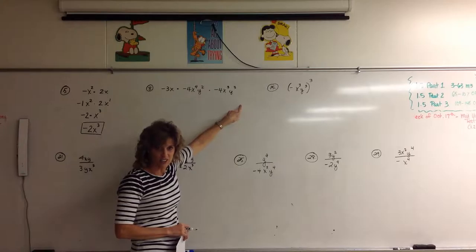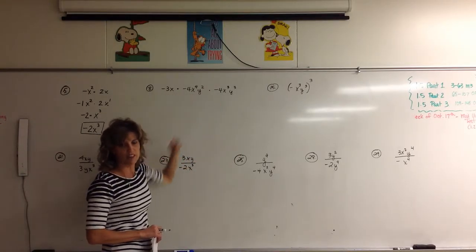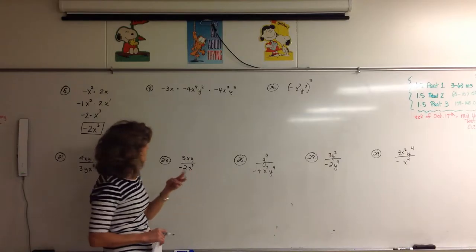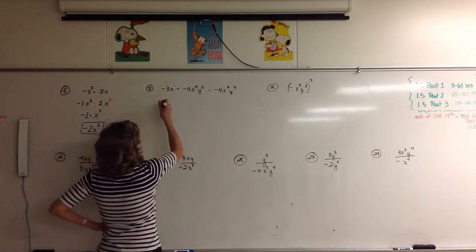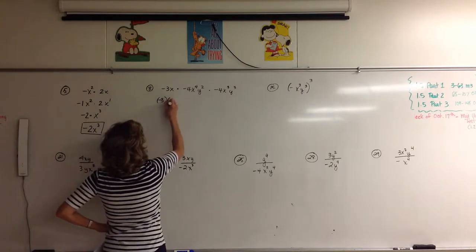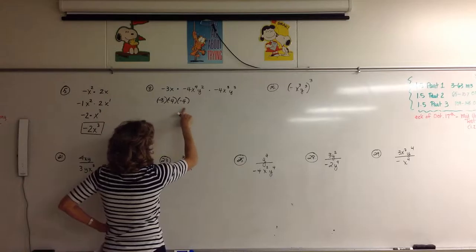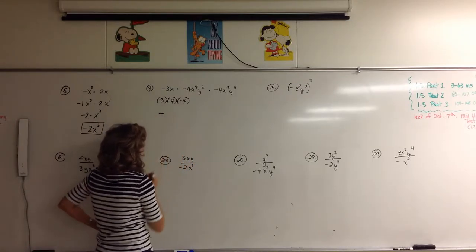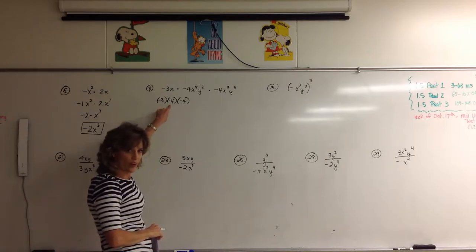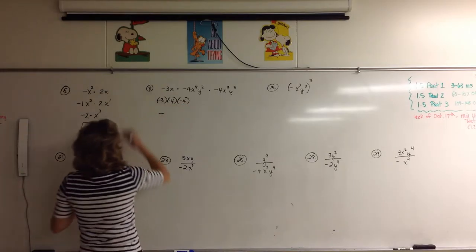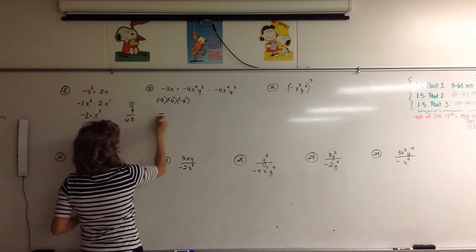Number eight — it looks a little scarier. Let's reorganize it because we're multiplying eight different factors. We're going to multiply all the numbers. How many negative signs do we see? Three. So the answer is going to be negative. We're going to think negative three times negative four times negative four — put all the numbers together, and we know the answer is negative.